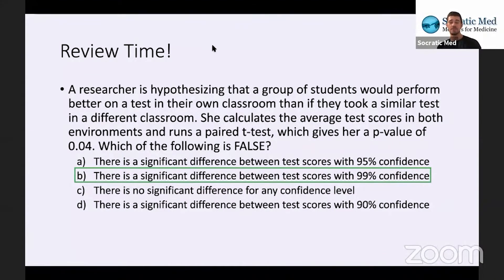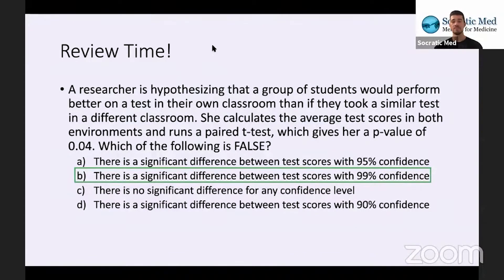When given the P value and the confidence or alpha, all you're doing is comparing the P value to alpha. If P is less than alpha, there's going to be a significant difference. We have P equals 0.04. Looking at option A — there's a significant difference between test scores with 95% confidence. Our P is 0.04, and for 95% confidence, alpha is 0.05. Since P is less than alpha, there is a significant difference, so that statement is true — not the correct answer.